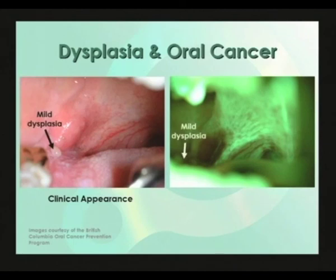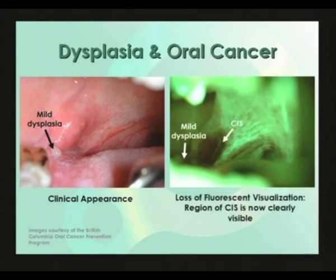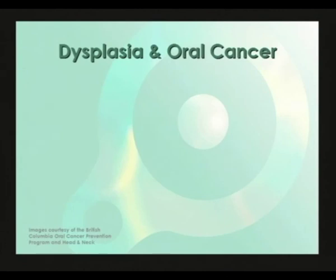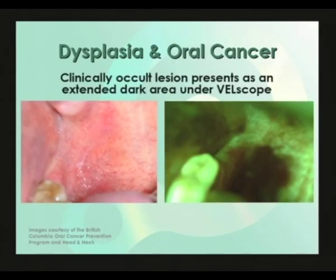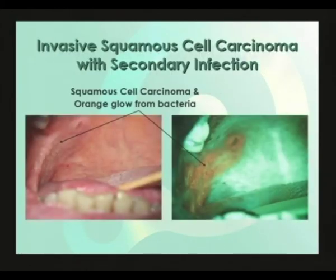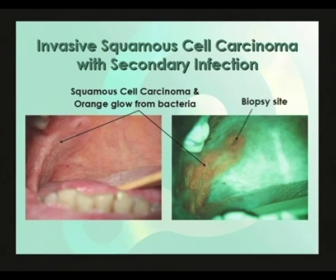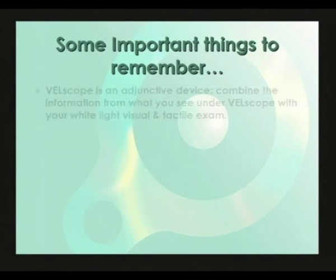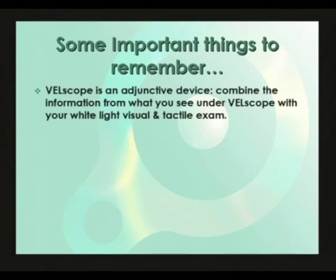The area that stood out under white light was found to be mild dysplasia. Interestingly, the area to the right that was not obvious in white light shows up as a dark area with quite well-delineated borders — biopsy confirmed carcinoma in situ. A classic clinically occult lesion is seen as a well-delineated dark area under VELscope, with biopsy also showing carcinoma in situ. A remarkable image shows invasive squamous cell carcinoma with a secondary infection — the bacteria give off their characteristic orange-red glow from porphyrin fluorescence, and the dark area at the top is a previous biopsy site.